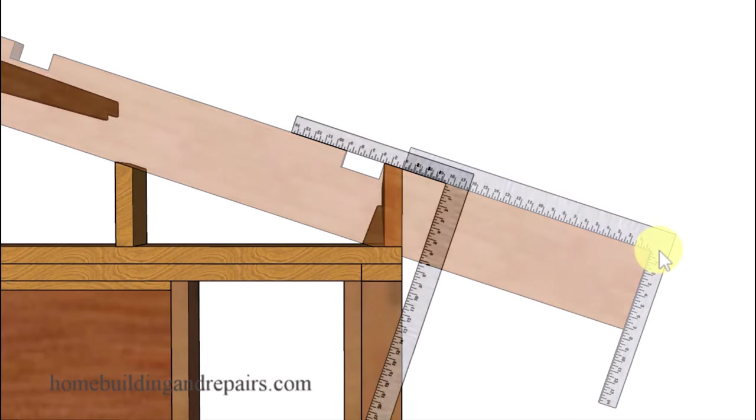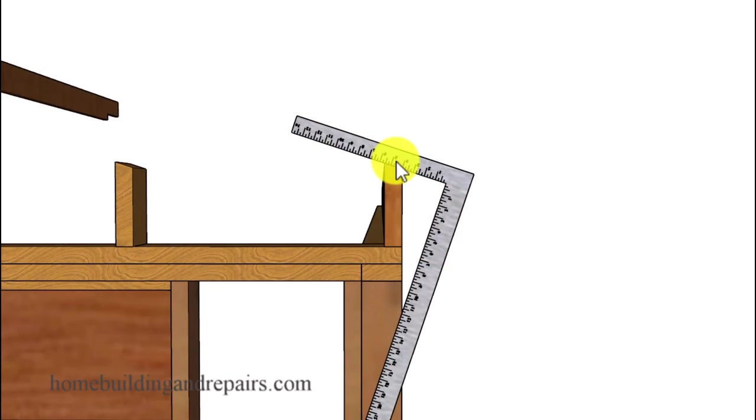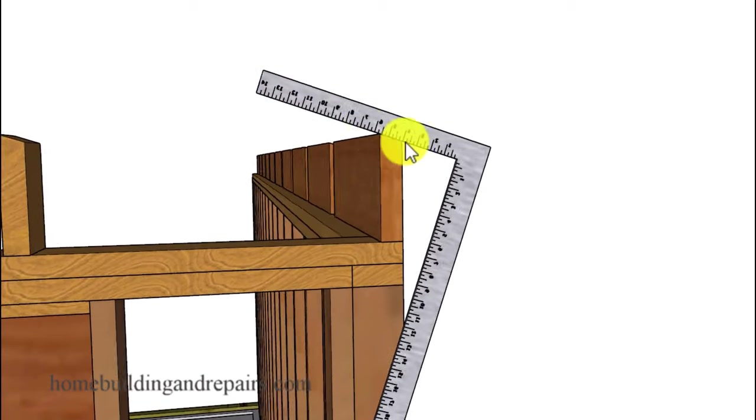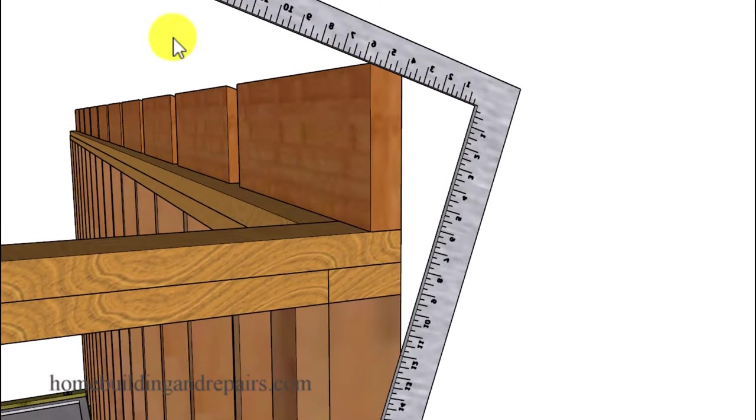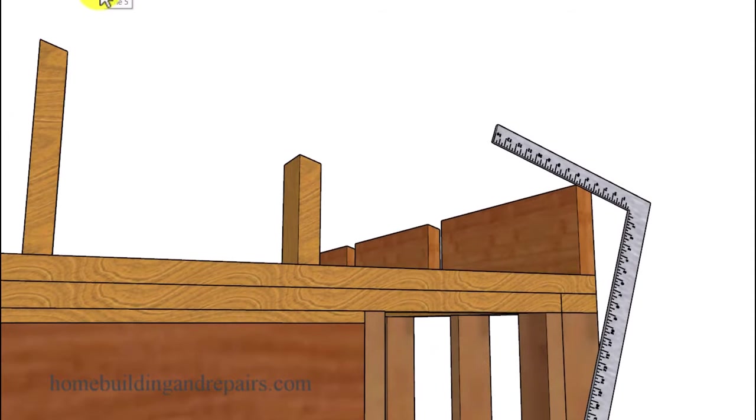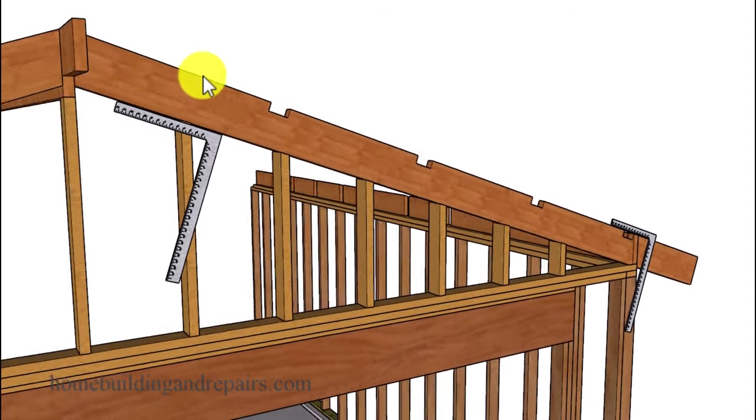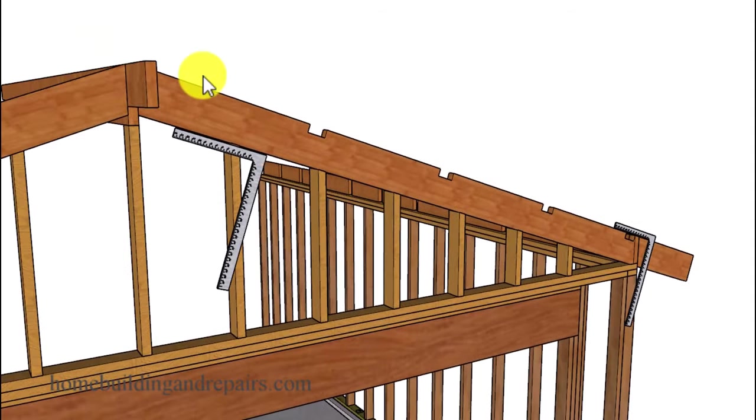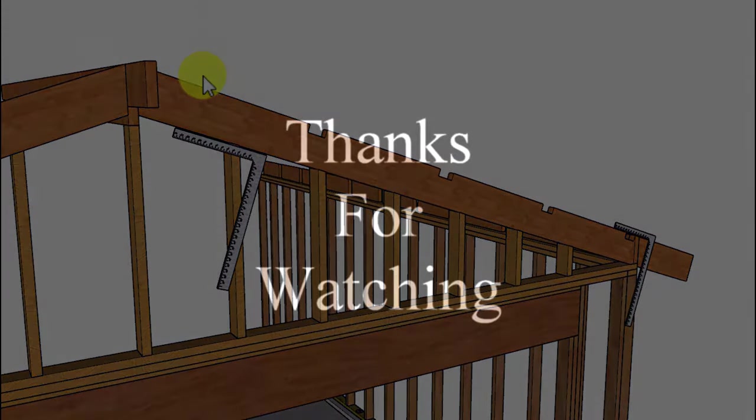And if you need the angle for the top of the blocks, then again we're going to be able to use the framing square for that also. And since I can't think of any other angles you're going to need for your gable roof, let's go ahead and wrap this video up. If you have any questions at all, feel free to leave them in the comment area, or video suggestions for future videos. Leave those in the comment area also.